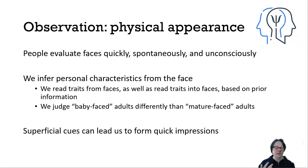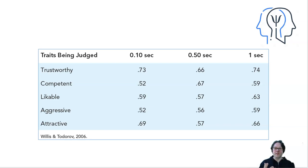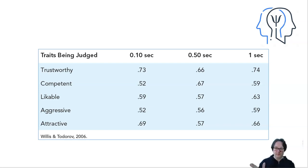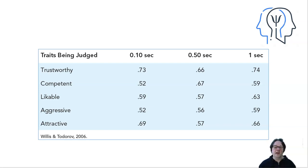Superficial cues we see in an individual's face lead us to make really quick impressions, not just of appearance but of actual personalities. A study compared three groups — one that had one-tenth of a second, one that had half a second, and one that had a full one second — to a control group with unlimited time, asking them to judge faces on traits such as trustworthiness, competence, likeability, aggressiveness, and attractiveness.